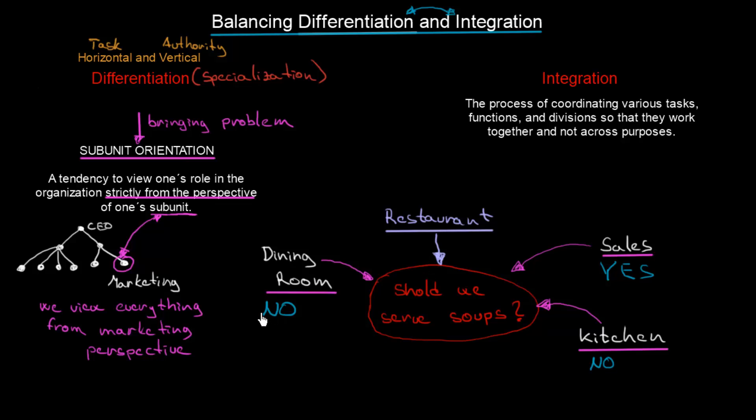But now you see, because of these subunit orientations, we can have a lot of problems. If we would let our employees vote for the answer, we wouldn't have soups because the dining room personnel will view it only from their perspective. The kitchen will view it from their perspective. And their answers are no. Only the answer of a sales team is yes. So you see that subunit orientation is really a problem in organizations.